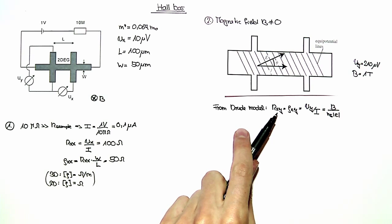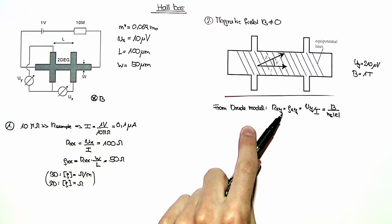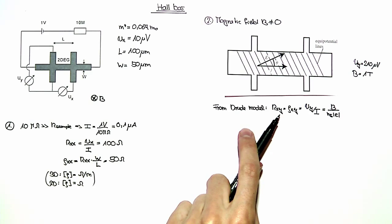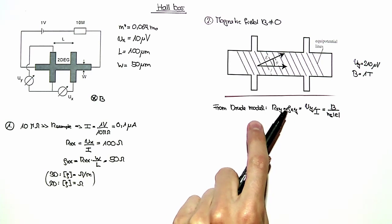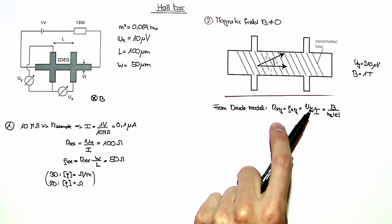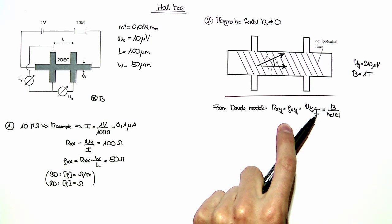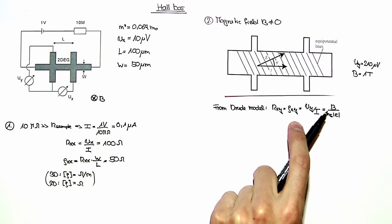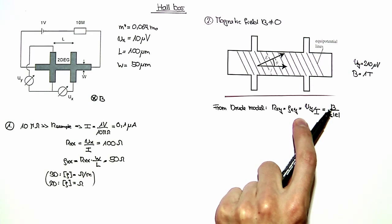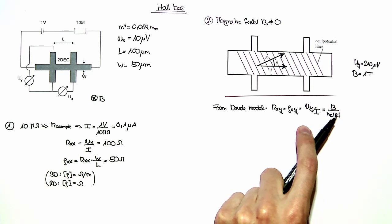Within the Drude model, the transverse resistance Rxy is given with this equation here. Rxy is equal to rho_xy, which is just the transverse voltage drop Uy over the current through the system. Within the Drude model, this is given as the magnetic field over the electron sheet density times the electron charge.